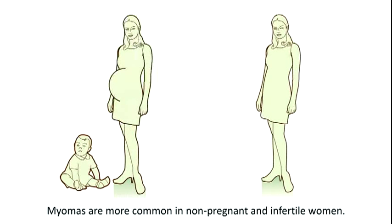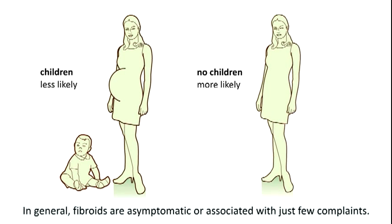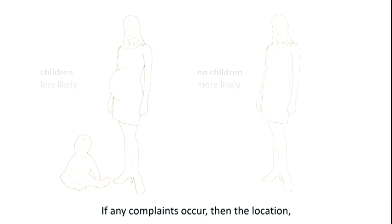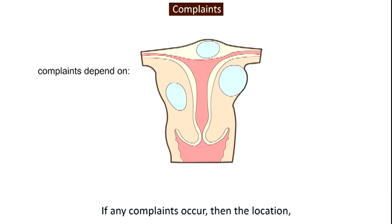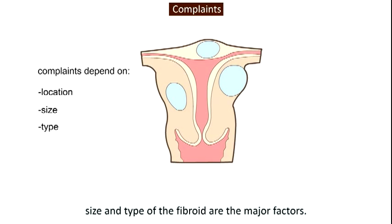Myomas are more common in non-pregnant and infertile women. In general, fibroids are asymptomatic or associated with just a few complaints. If any complaints occur, then the location, size and type of the fibroid are the major factors.